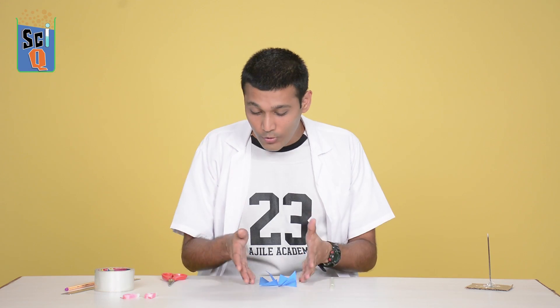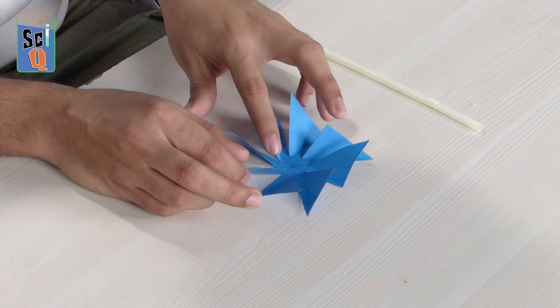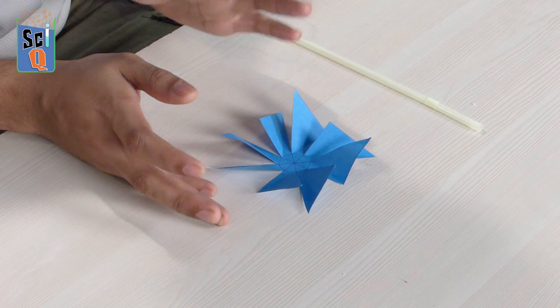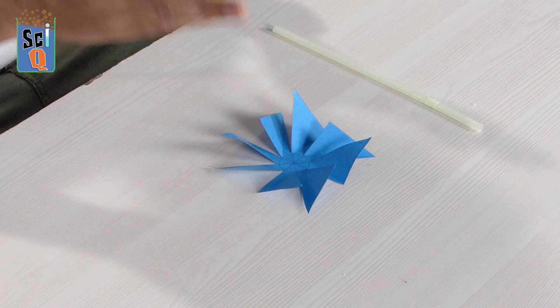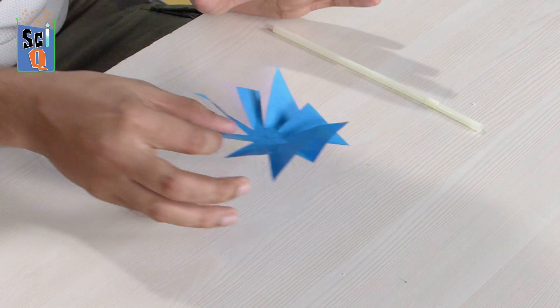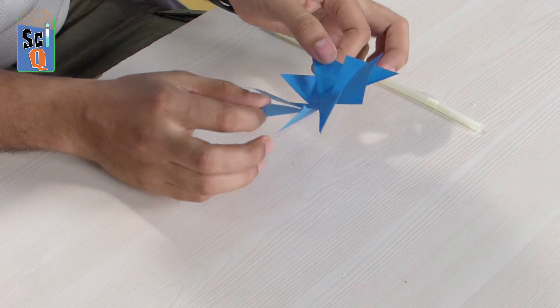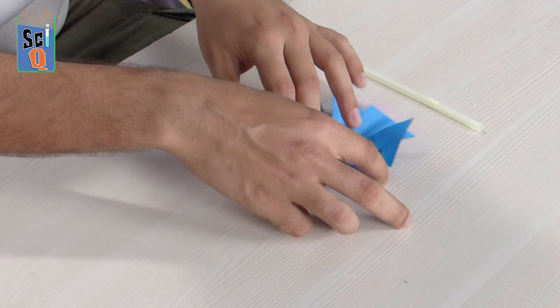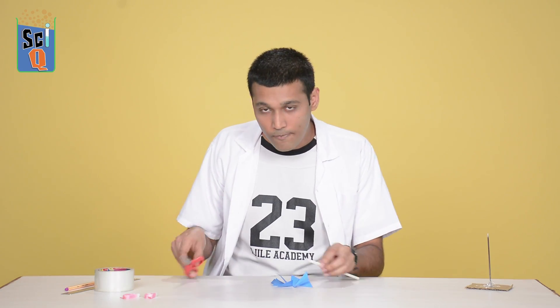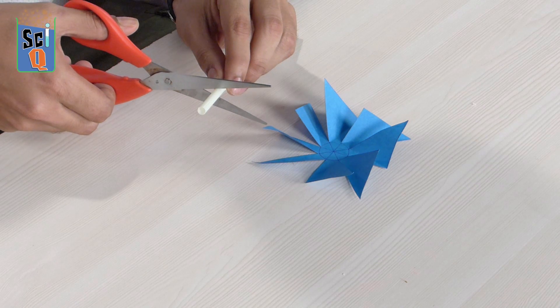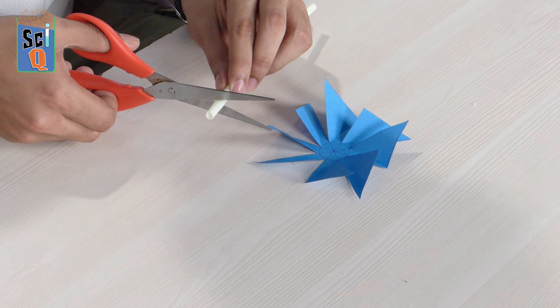So your turbine is now done. It should look like this. Try to make sure that these wings aren't overly bent. If they are, you can fix that. It's very simple. All you have to do is find a book, place this within the leaves and push it down nicely. So once you're done, once you pull it out, it should look sort of something like this. Next, we take a straw. We take our scissors and we cut a tiny piece off it. It should be about that much.